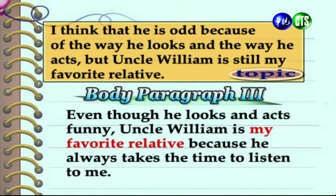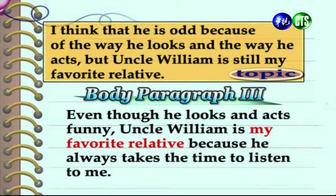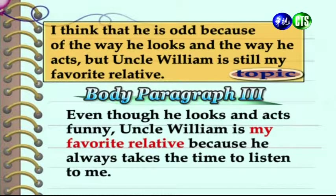Finally, here's the topic sentence of the third body paragraph. 現在各位同學看到的是第三個主體論述段落的主題句。It says: 'Even though he looks and acts funny, Uncle William is my favorite relative because he always takes the time to listen to me.' 雖然威廉叔叔外表跟舉止都很好笑，但他是我最喜歡的親戚，因為他總是願意花時間聽我講心事。We can see that this third body paragraph focuses on why Uncle William is the writer's favorite relative, so it matches the third idea presented in the thesis statement. 由這個主題句我們可以知道這個段落應該會講述說為什麼威廉叔叔會成為我最喜歡的親戚，這當然又跟主旨陳述中提到的第三個重點是一樣的。